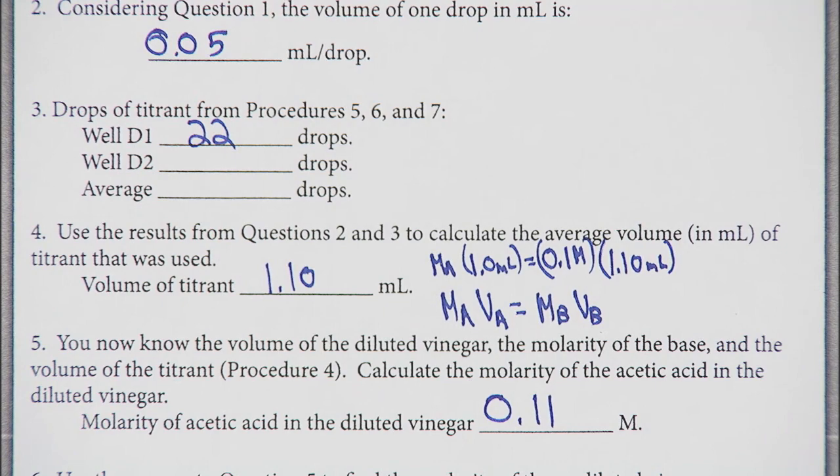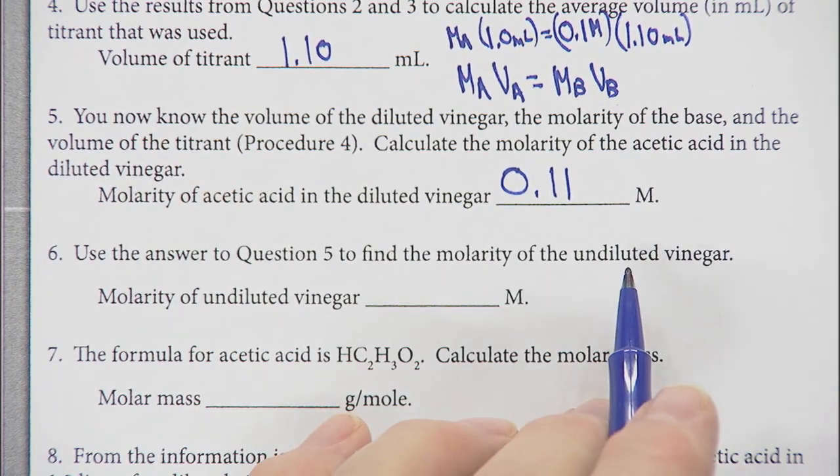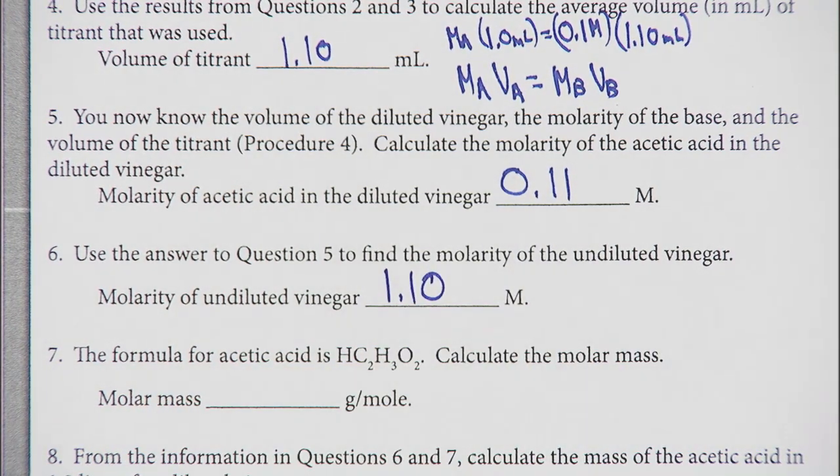We diluted it 10 fold, so that means the undiluted is 10 times more concentrated. Move the decimal point: 1.10 molar. That's the concentration of our vinegar.